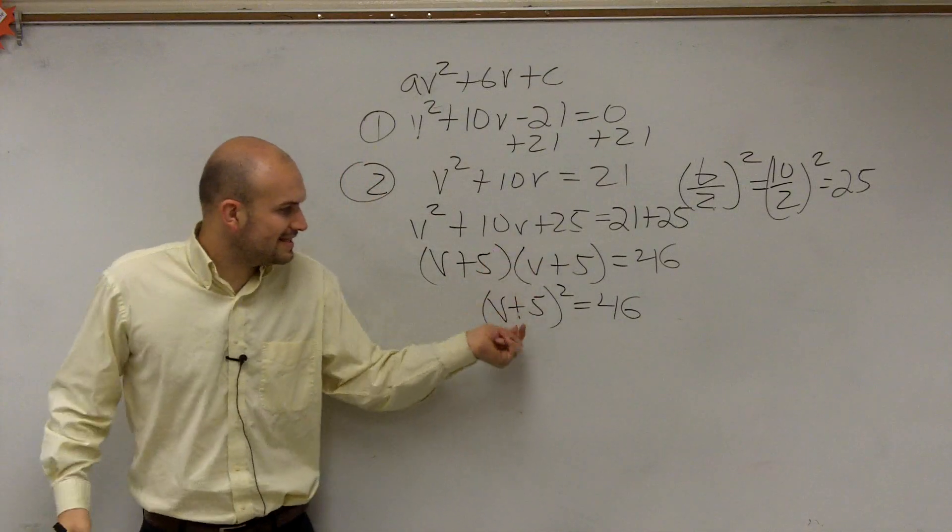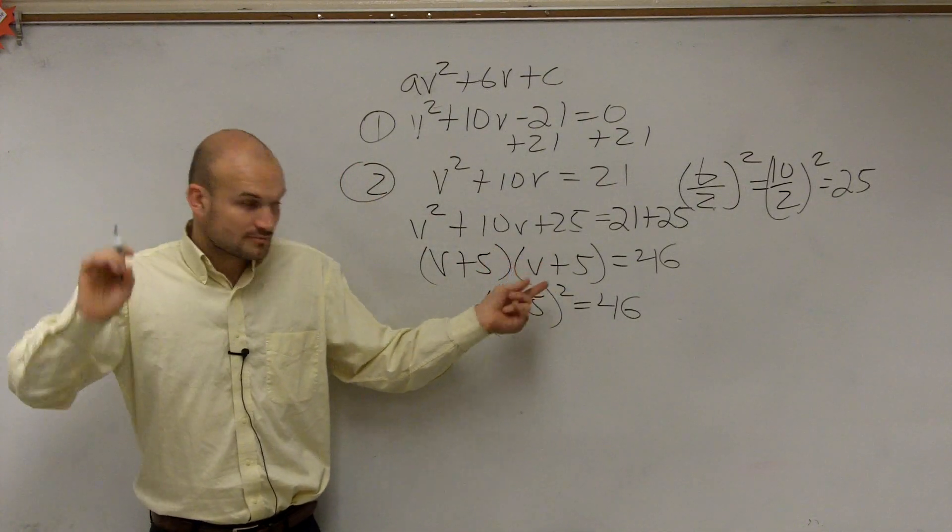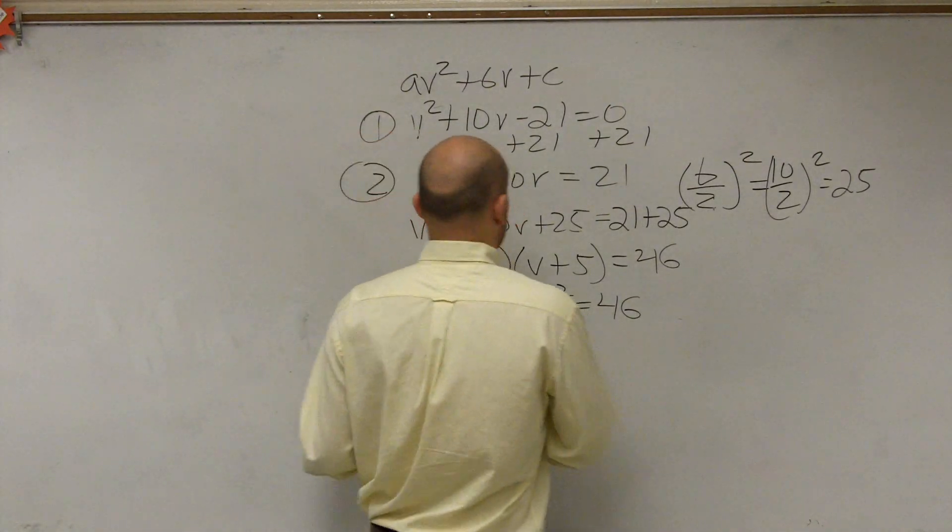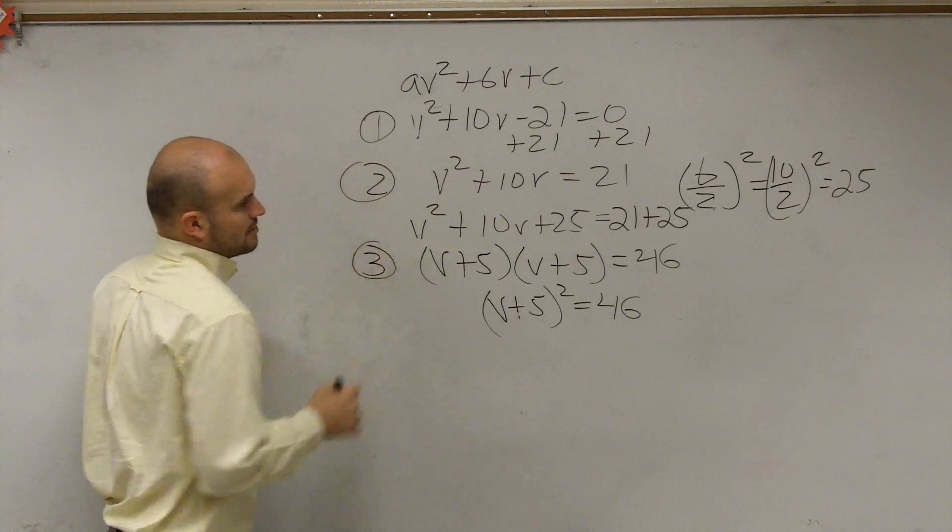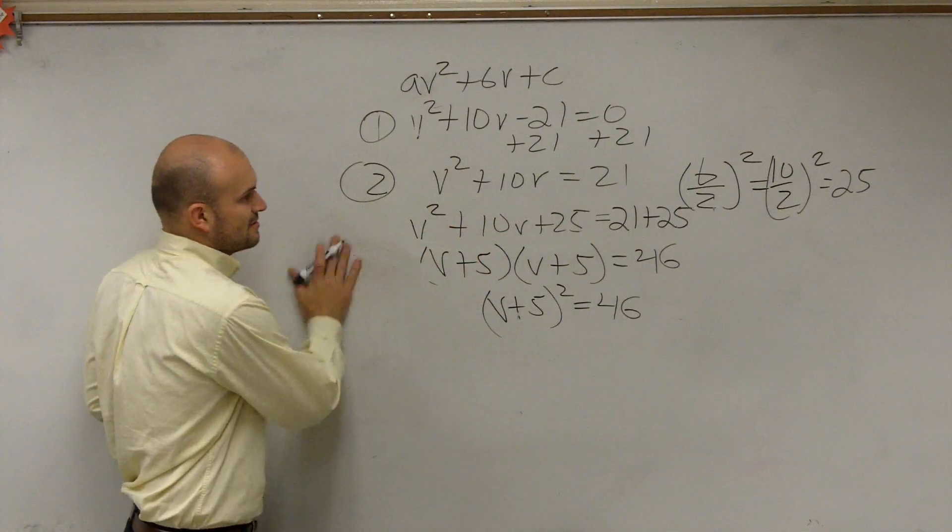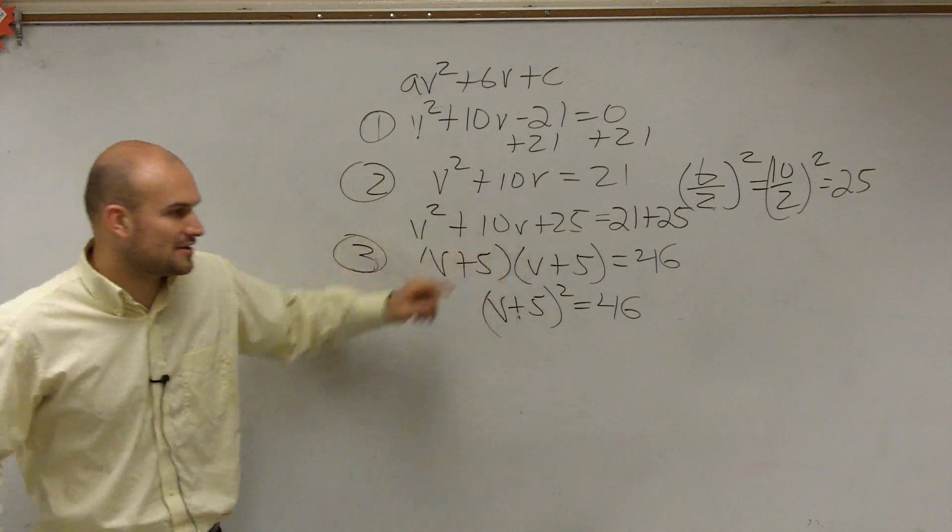And why do we want to write it like this rather than writing it like that? You always have to write it like this because here's your reasoning. First of all, before we finish up step number three, so ladies and gentlemen, if you can't figure out how to factor this, if you can't figure out saying, all right, how do I now rewrite this? How do I factor this?